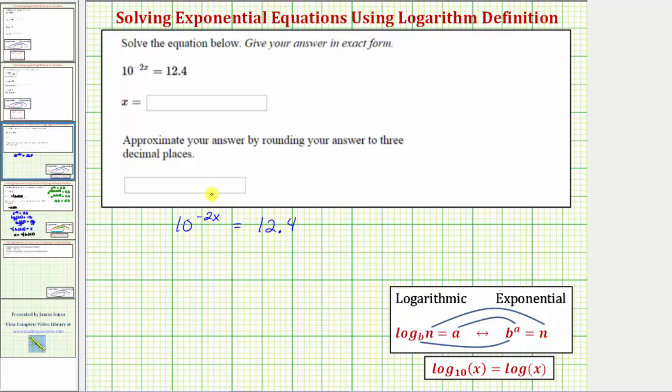Because the exponential part is already isolated, there are two main ways to solve this equation. We could take the common log of both sides of the equation because we have base 10 here, or we can write the exponential equation as the equivalent log equation using the definition of a logarithm shown here.